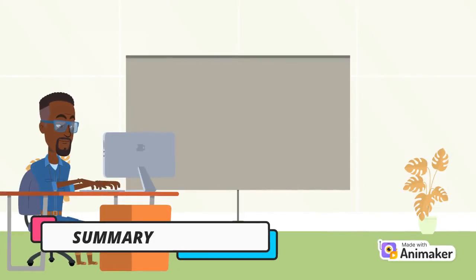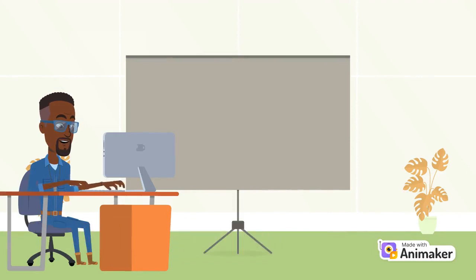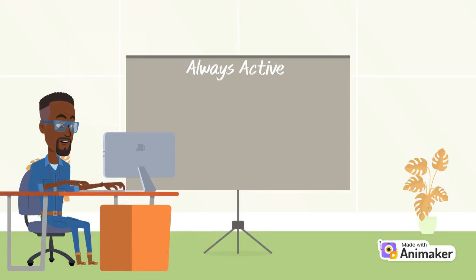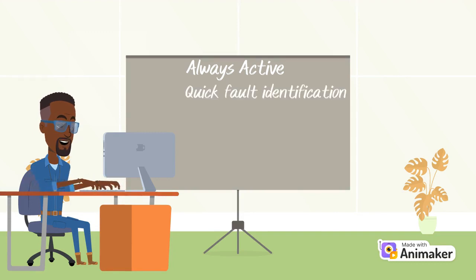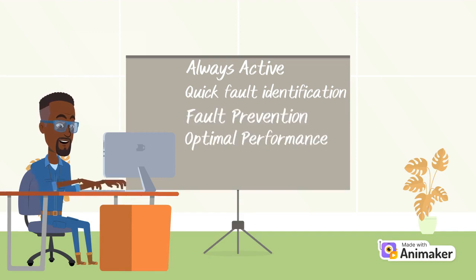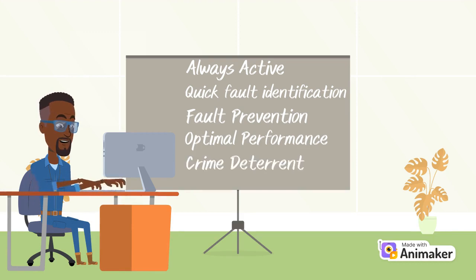In summary, carrying out a scheduled preventive maintenance will ensure that your CCTV will be active almost always. This means that when an incident occurs, you will be confident of getting video footage from your system. All faults will be identified and dealt with in record time, and in most cases, prospective faults will be averted. All components of your CCTV system will operate at an optimum level. Also, an active CCTV system will be a deterrent to criminals.